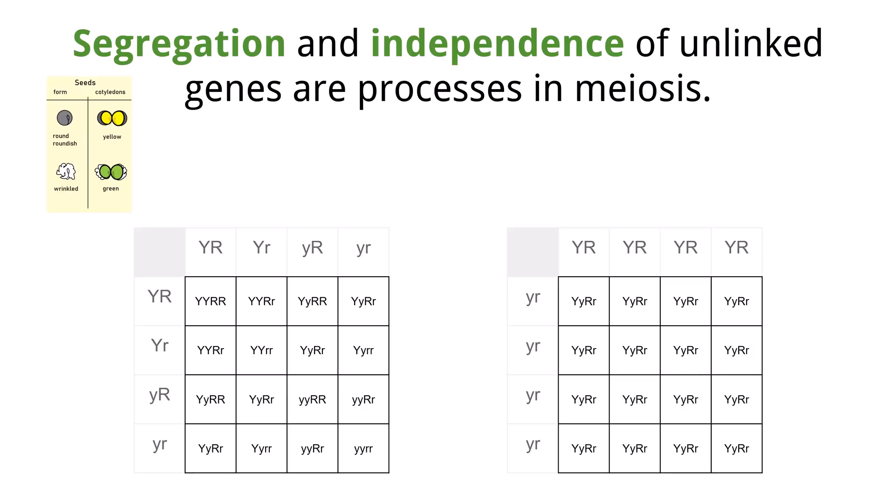A monohybrid cross is looking at only one trait, like we did in the last video. There are times that two traits need to be examined. This is called a dihybrid cross.